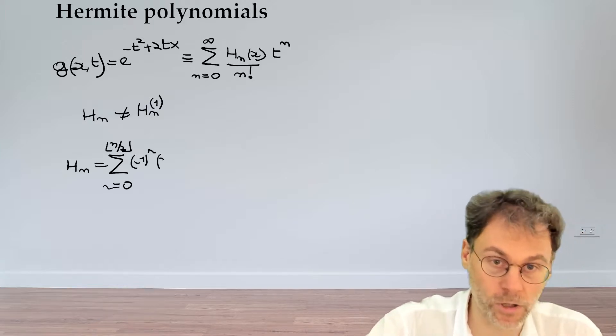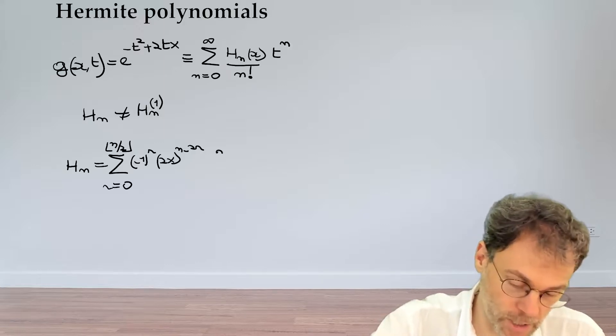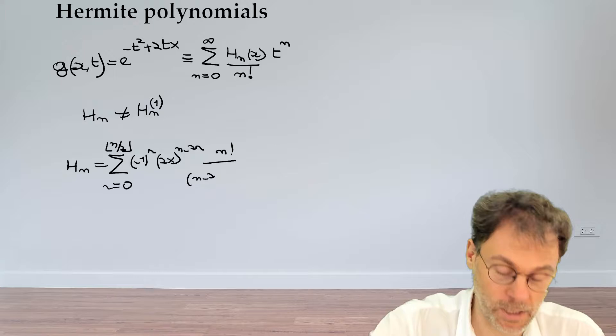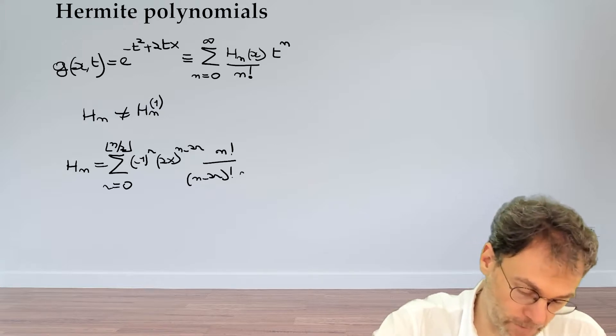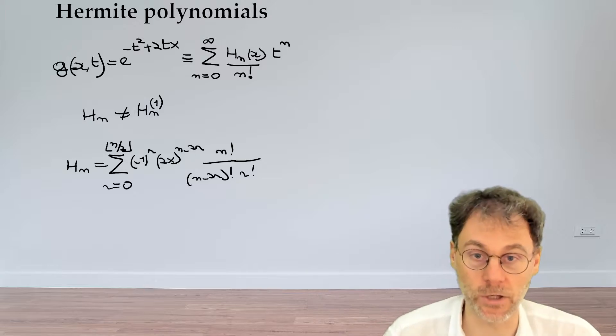(-1)^r times 2x to the power n minus 2r, and then we throw in some factorials for good measure: (n-2r)! r!. So let's see a different video for this derivation.